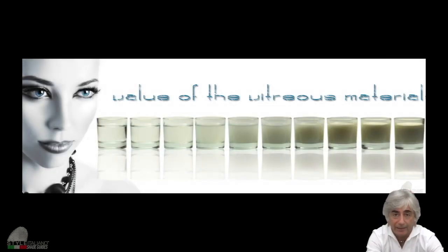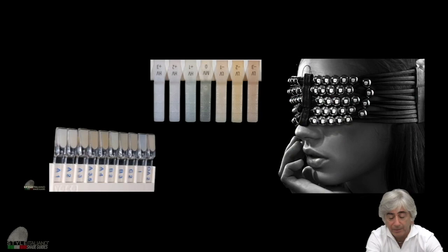So only indicating a letter and a number is A2 doesn't mean absolutely nothing if we don't know very well what there is inside the syringe and what there is inside the tooth. If the tooth is opaque, if the tooth is translucent. So only after checking this point, you can obtain a good result knowing very well what kind of material you have in your hands.